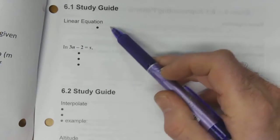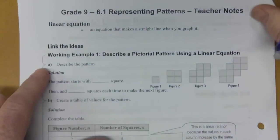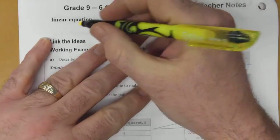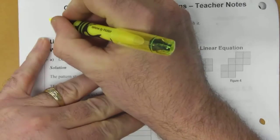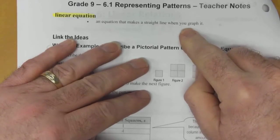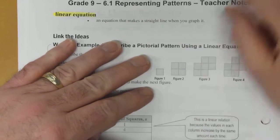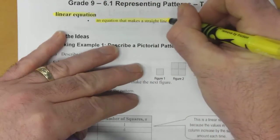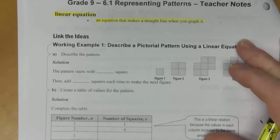Also, for studying purposes, as we go through the notes, you can copy out some definitions and some examples here in a bit of a study guide. So, 6.1 — Representing Patterns. First up, we do have this definition which you can write in your study guide if you wish. It's for a linear equation, and that is an equation that makes a straight line when you graph it. So that's our first definition.